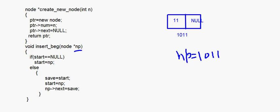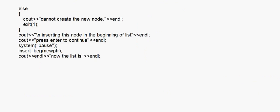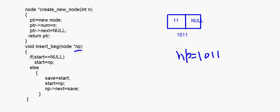Initially when we started off, we took start as null. Start equals null only when the linked list is empty. First of all, we check if start == null. If start equals null, this is going to be the first node of your linked list. So we say start = np. np is 1011, so inside start you get 1011.